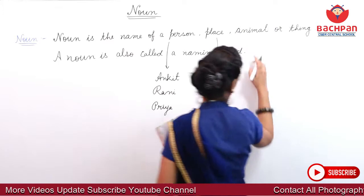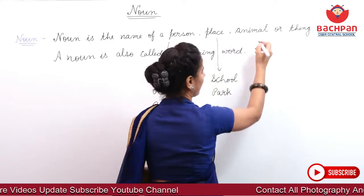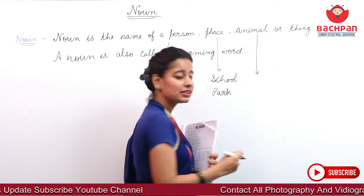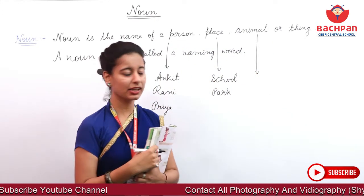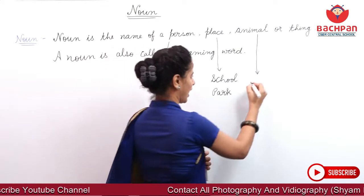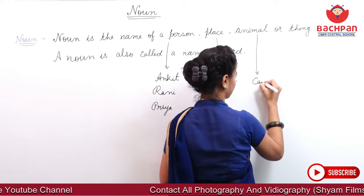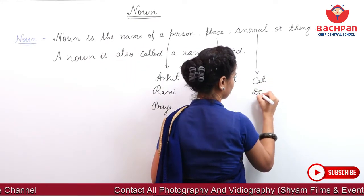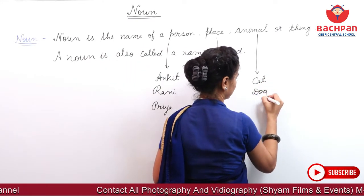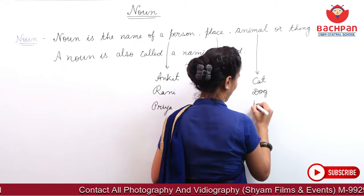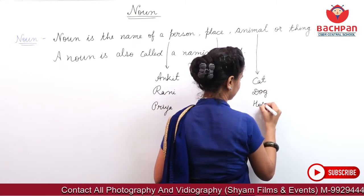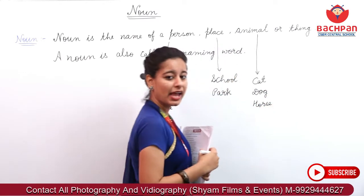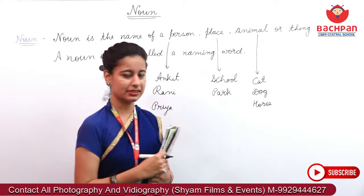Okay? Animals. You don't know? Animals. Aapko pata hai? Animals kya hote hai? Cat. Dog. Horse. Ye sab kya hai? Animals hai.